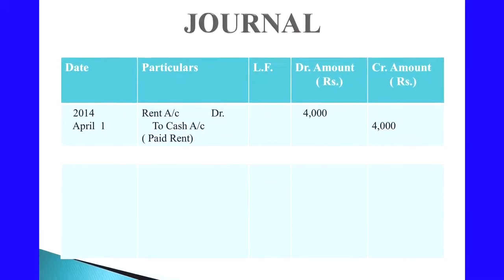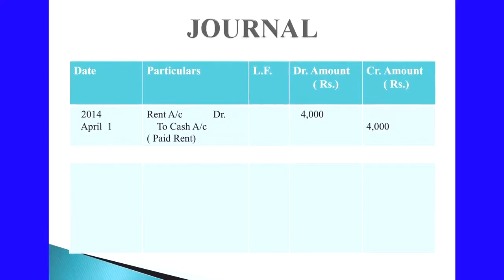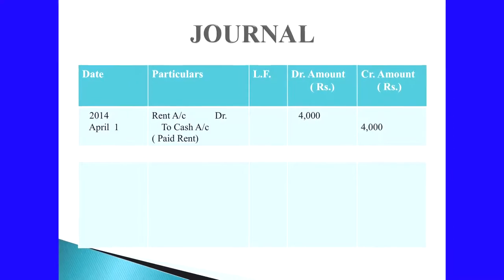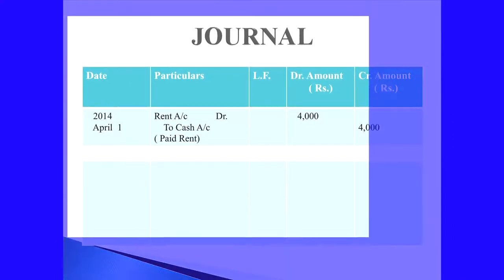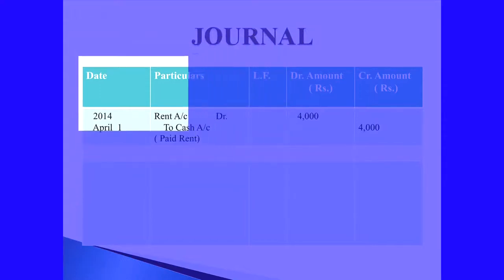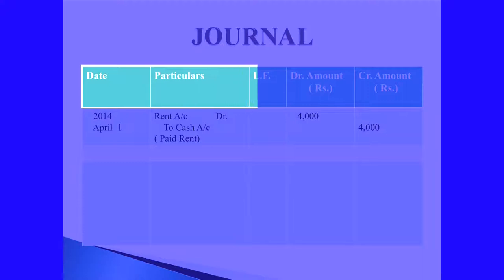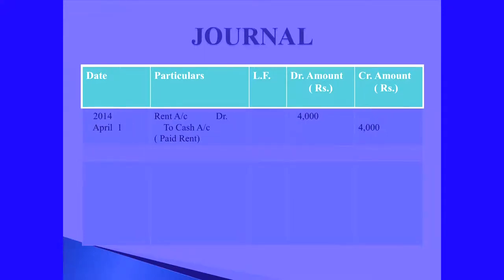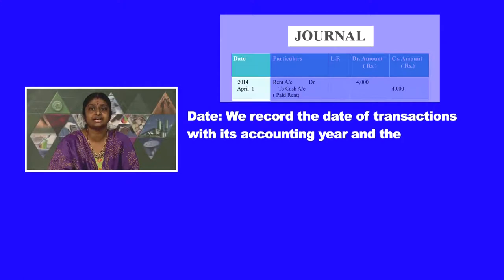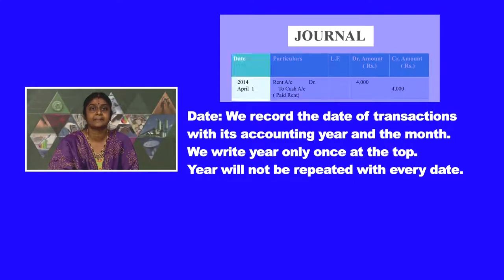Now in the slide you can see the format of a journal. Every page of the journal has a particular format as given in the slide. It is a columnar book — each column is given a name: date, particulars, ledger folio, debit amount, and credit amount are the columns in the journal. In the date column, we record the date of the transactions with its accounting year and the month. We write the year only once at the top; the year will not be repeated with every date.